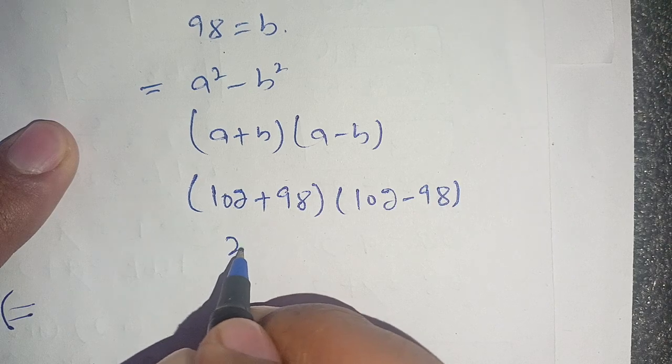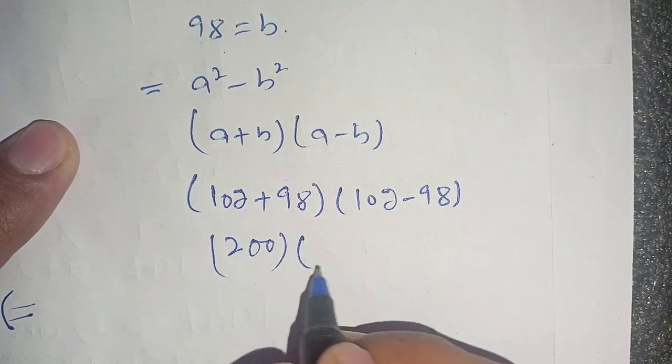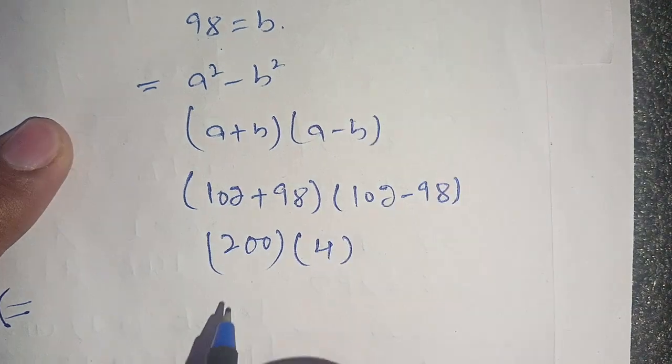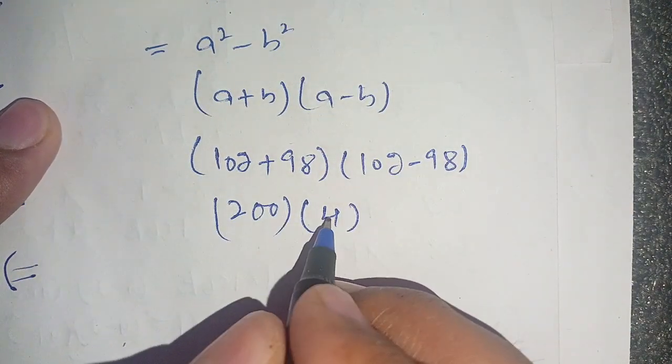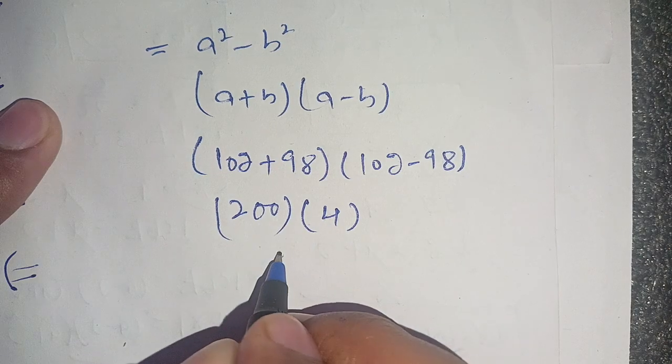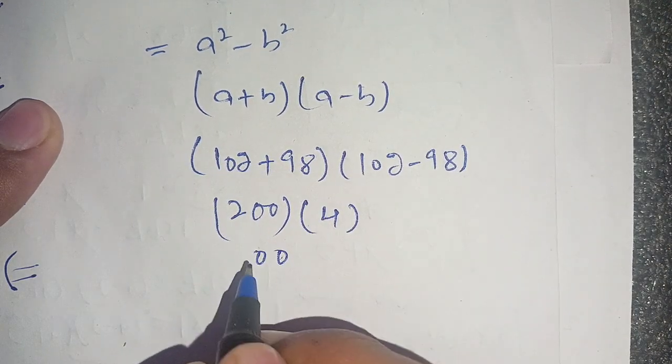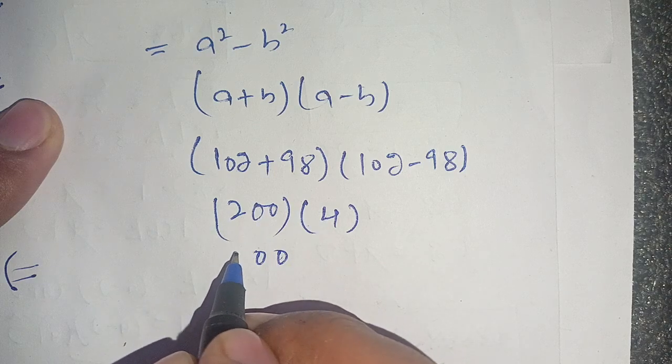Times 102 minus 98, it will become only 4. When we multiply 200 with 4, it becomes: 4 times 0 is 0, 4 times 0 is 0, and 4 times 2 is 8.